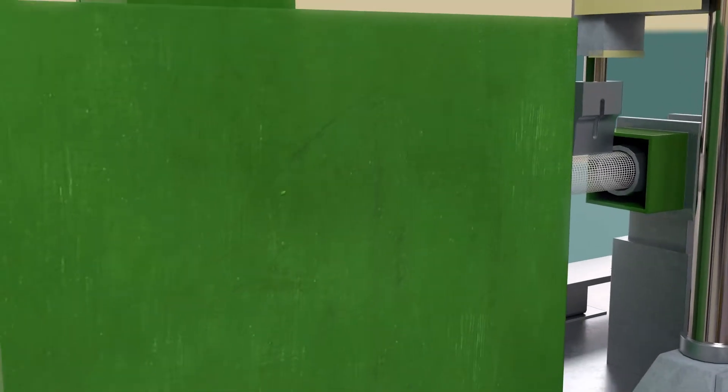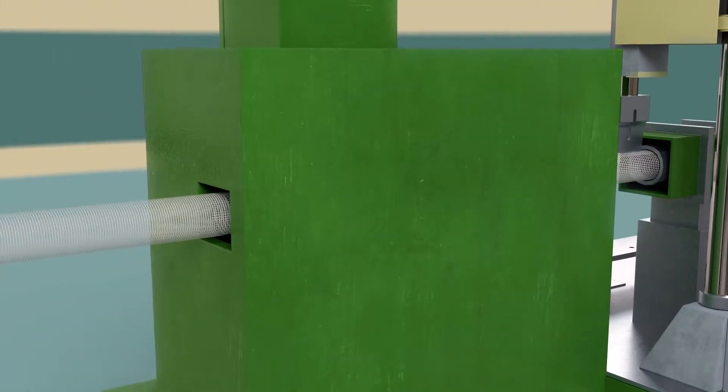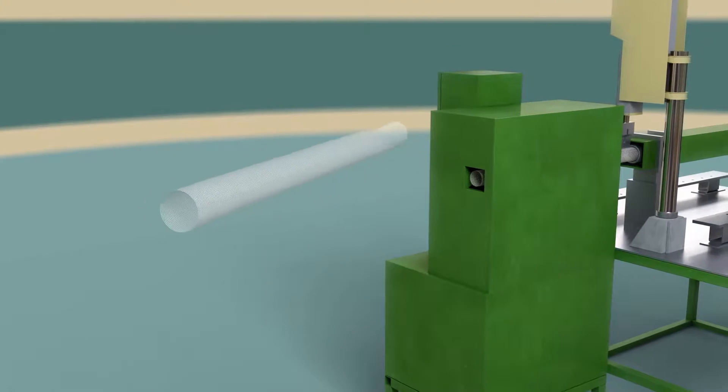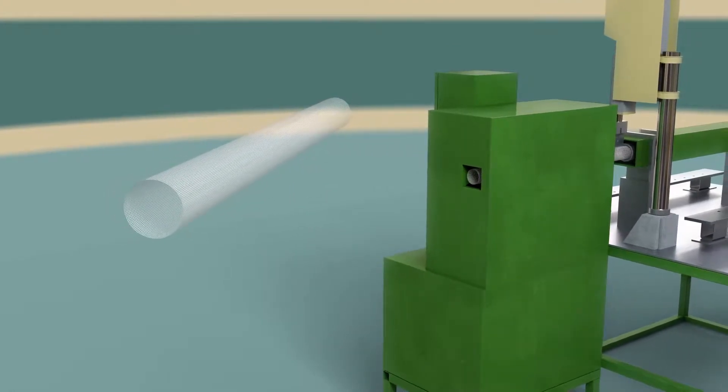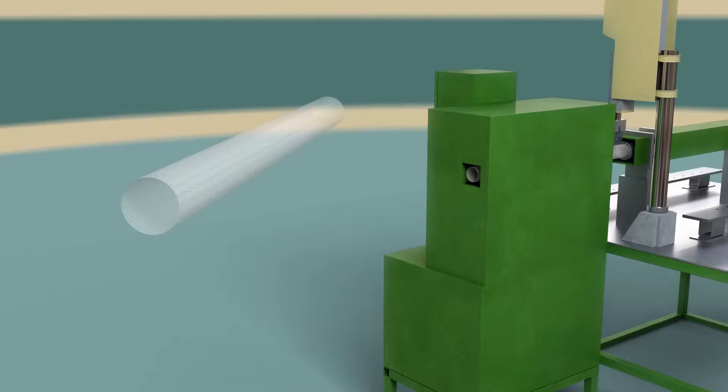Extruded tubes are typically limited to a maximum ID of 4.5 inches, while fabricated tubes allow for a wider array of diameters for center cores, cages, or protective outer wraps.